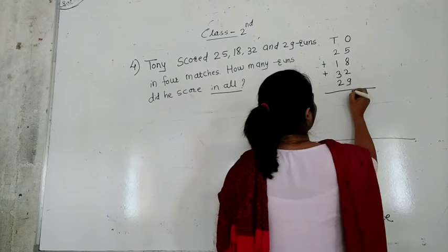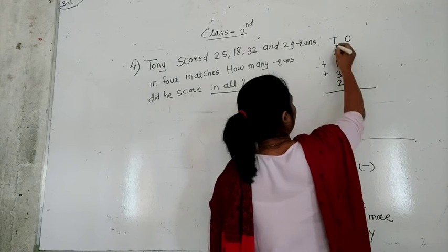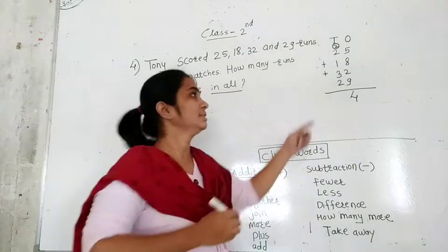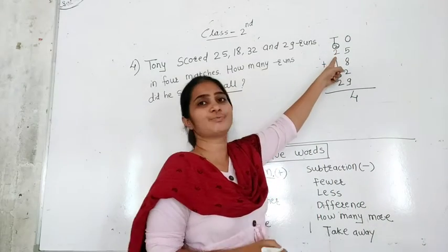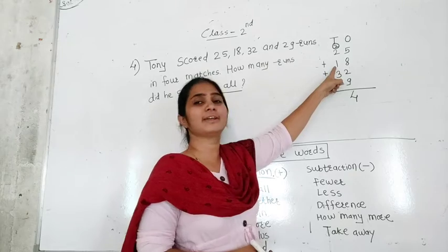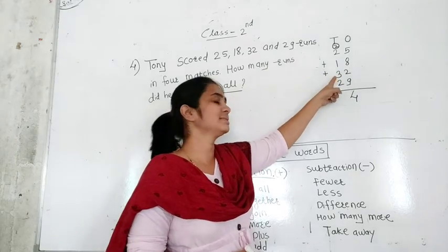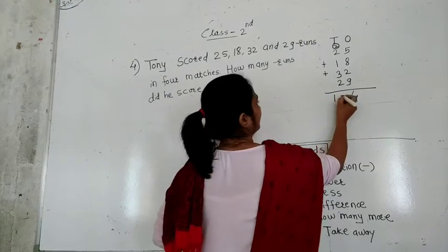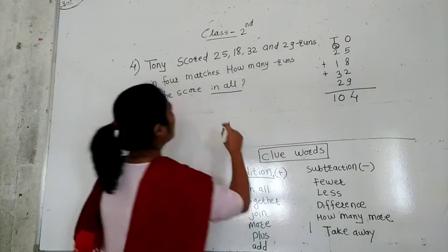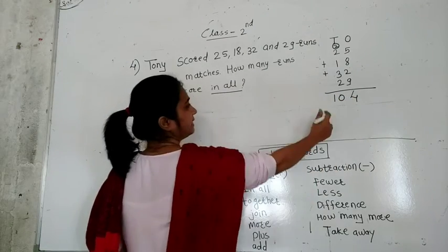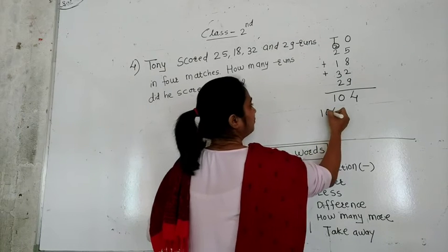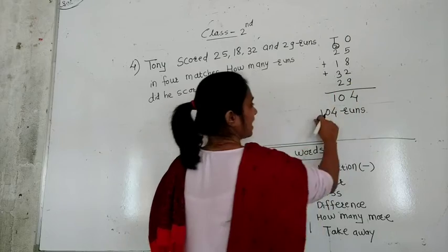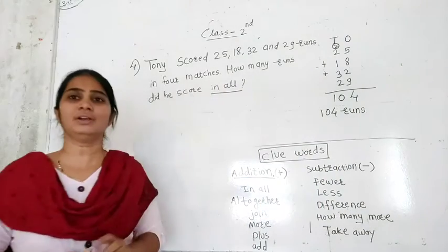So I write 4 here, and 2 as a carry in the tens column. Then 2 plus 2 is 4, and 4 plus 1 is 5, and 5 plus 3 is 8, and 8 plus 2 is 10. So how many runs? I write here 104 runs. Our answer is 104 runs.